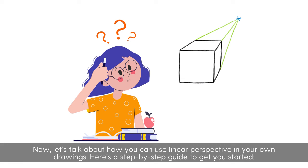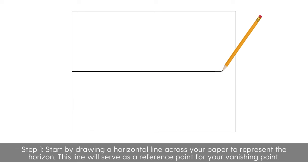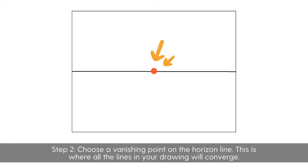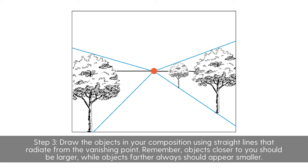Now let's talk about how you can use linear perspective in your own drawings. Here's a step-by-step guide to get you started. Step 1: Start by drawing a horizontal line across your paper to represent the horizon. This line will serve as a reference point for your vanishing point. Step 2: Choose a vanishing point on the horizon line. This is where all the lines in your drawing will converge.